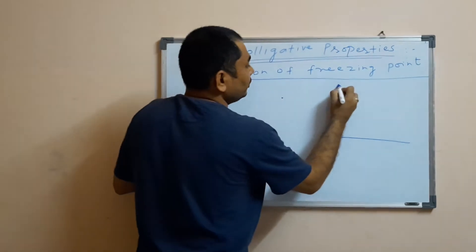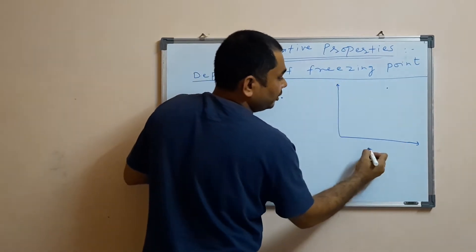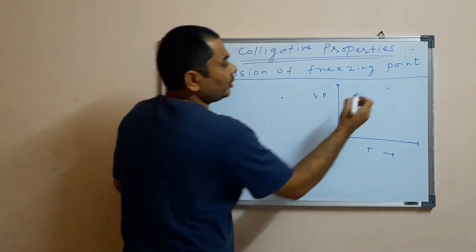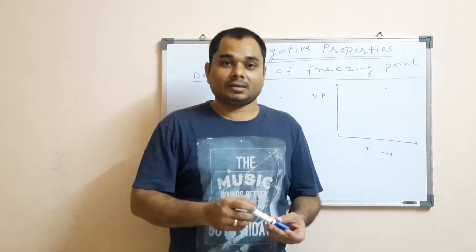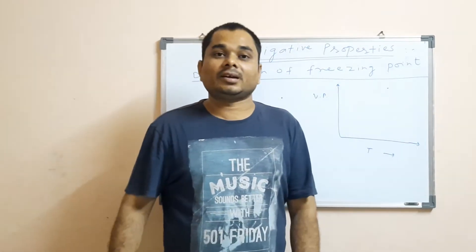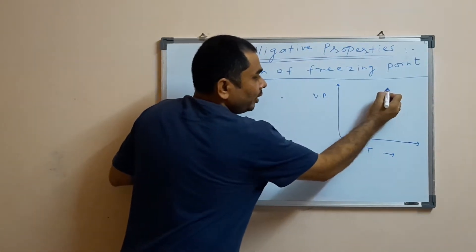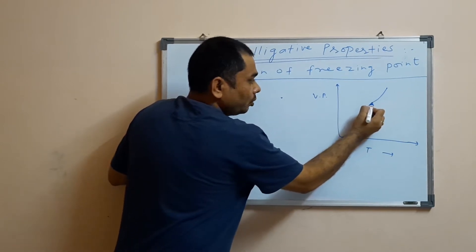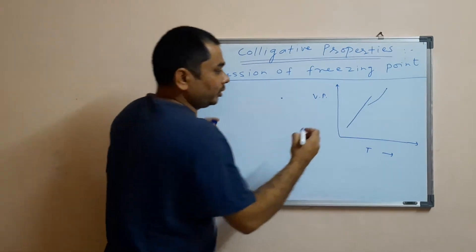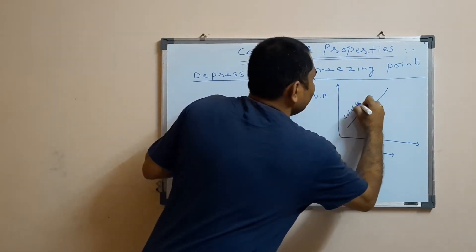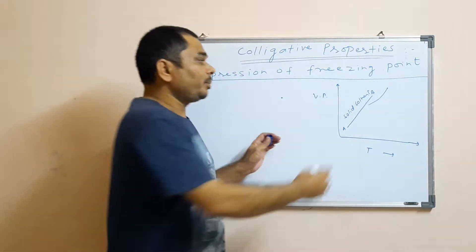There is a liquid whose vapor pressure at some temperature is shown here. This is the temperature axis and this is the vapor pressure axis. If we decrease the temperature, then the vapor pressure will also go on decreasing. This is the vapor pressure curve of the solid solvent.